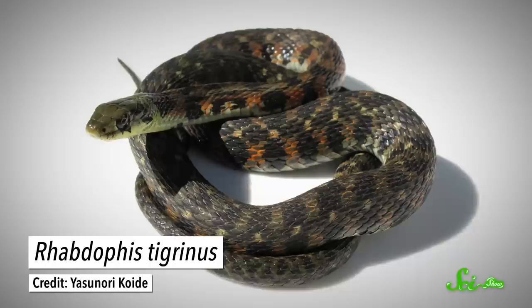Meet the tiger keelback! They got the best of both worlds—poison for their predators and venom for their prey. It can be easy to confuse the terms venom and poison, but the difference does actually matter.